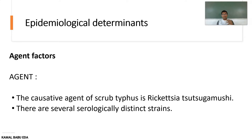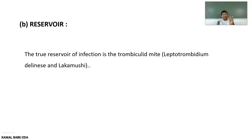The agent factor for Scrub Typhus is Rickettsia tsutsugamushi, and there are several serologically distinct strains responsible for this disease. The reservoir of infection is the trombiculid mite — specifically Leptotrombidium deliense and Leptotrombidium akamushi — which are the true reservoirs for Scrub Typhus.